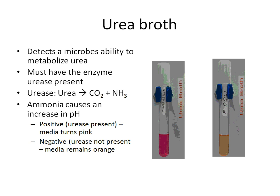Our second media for the day is urea broth. From the name, you can surmise it's a liquid that must contain urea. This media allows us to test a bacteria's ability to use urea as a food source. In this media, we do not give any sugar to the bacteria — we are testing whether the bacteria can break down a protein component. In order to do so, a very rare enzyme called urease must be present. Urea broth contains phenol red pH indicator, and at the yellow color, phenol red is at low pH.